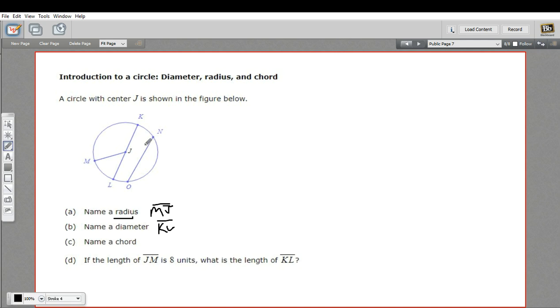A chord is a line like a diameter that goes from one end of the circle to the other end. It doesn't necessarily have to pass through the center. So a diameter is a type of chord. It's the longest chord you can get in a circle. But this one, NO, is also a chord. So we could say this segment NO is a chord of that circle.